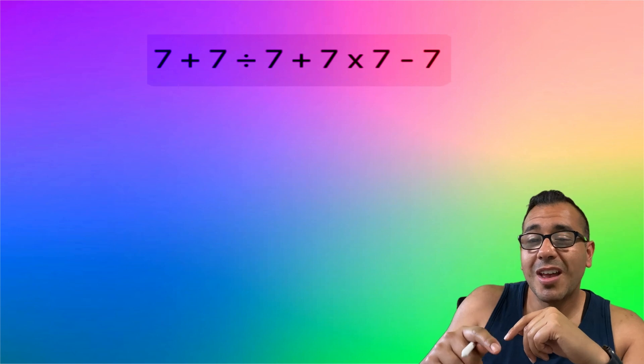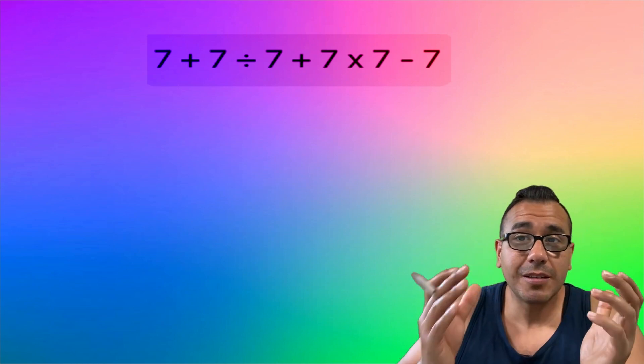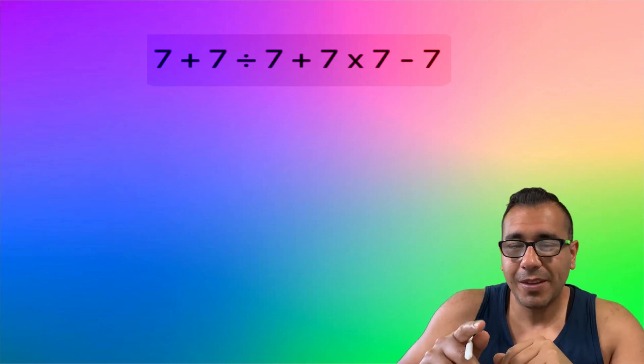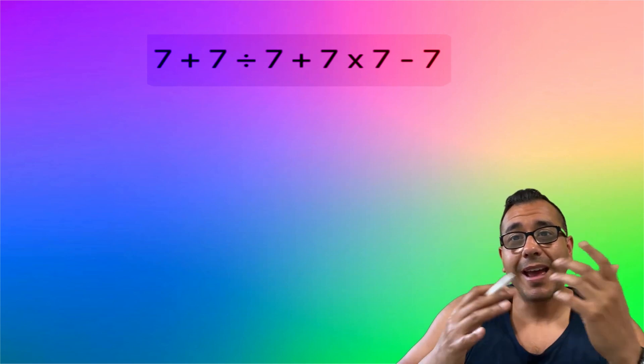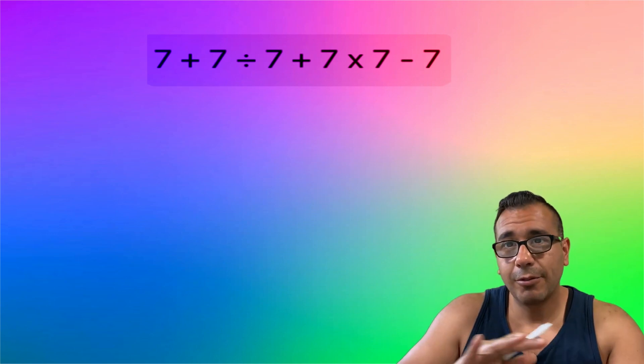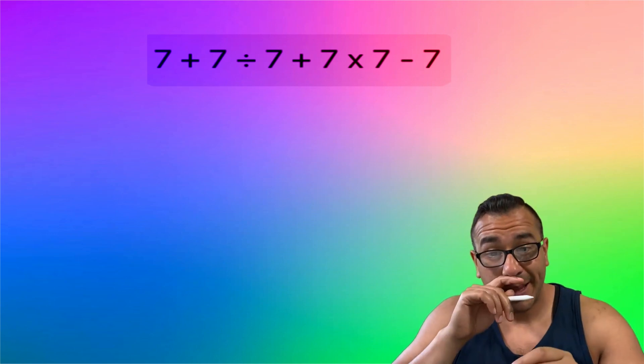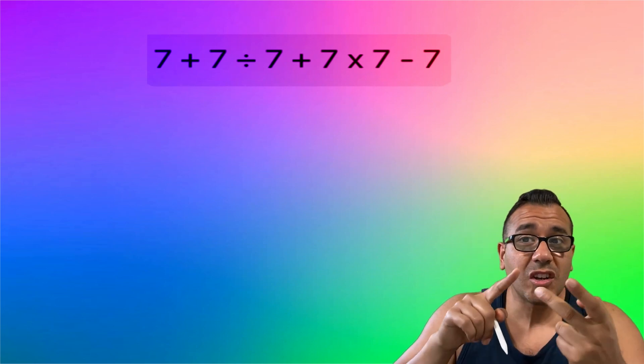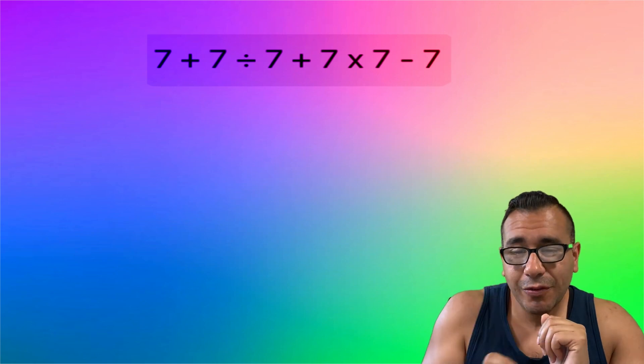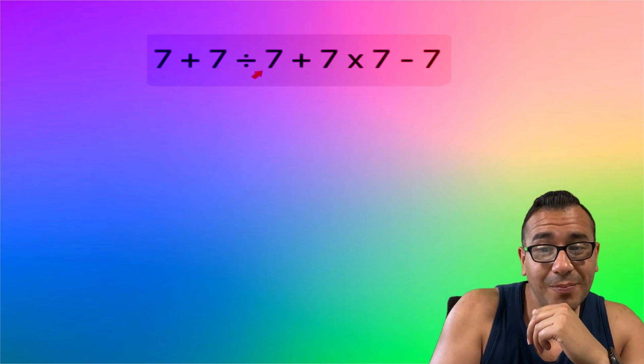Lucky for us there are no parentheses. Second thing we look for: exponents. You see any exponents? No, we don't got exponents going on. Next, multiplication or division, whatever one you see first from left to right you do first.